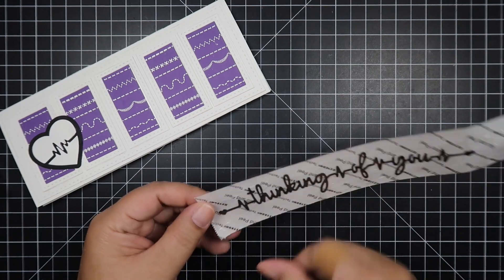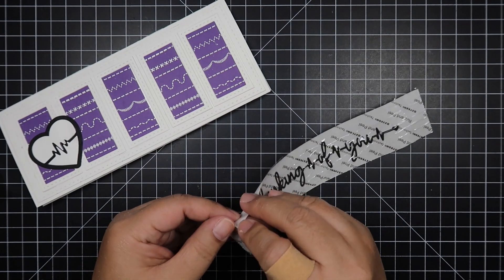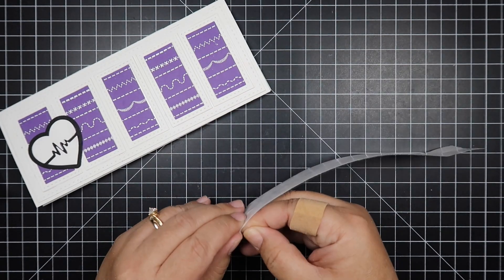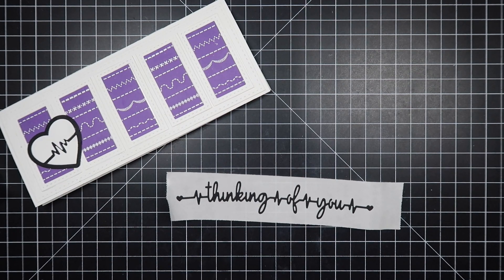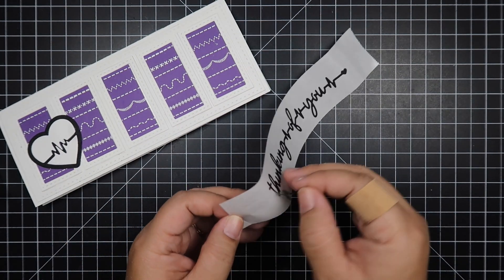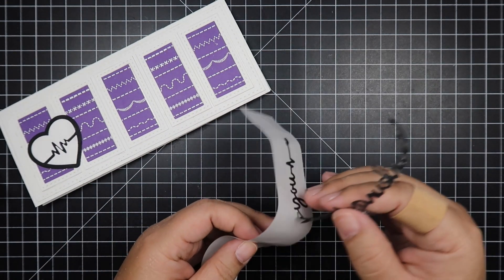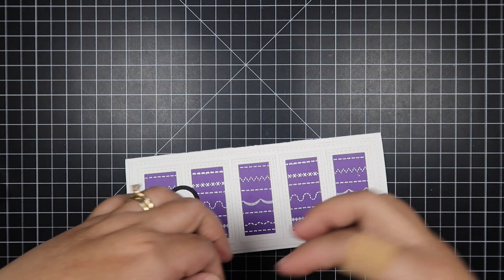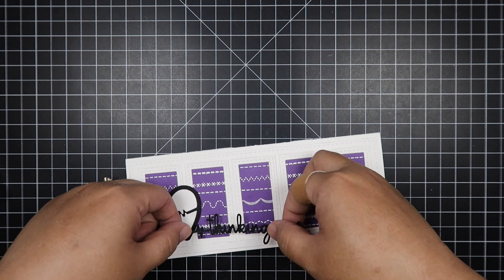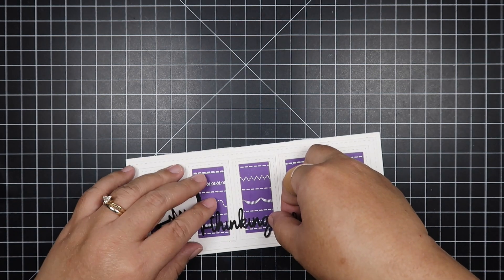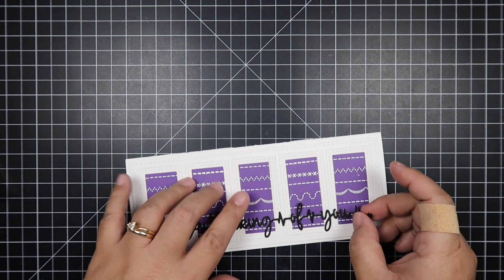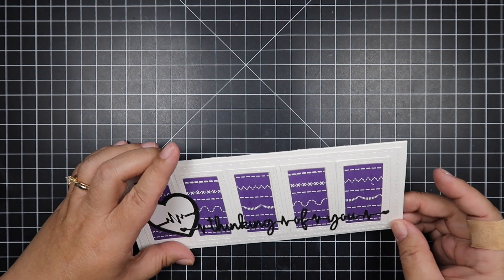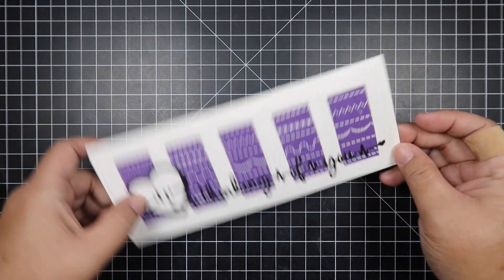Just doing one final burnishing down, and then I'm going to peel this off carefully. There is so much detail on this word die that I don't want to rip it.